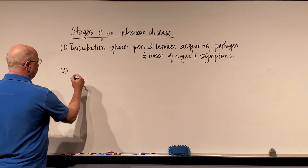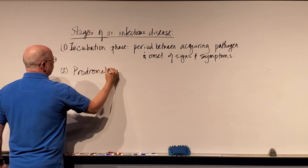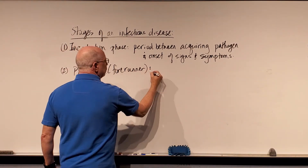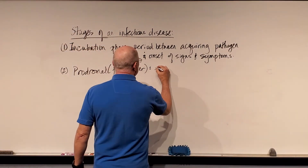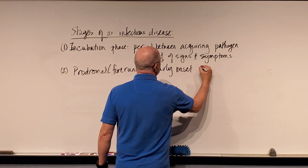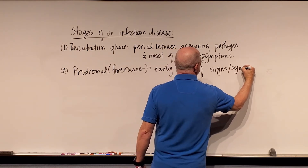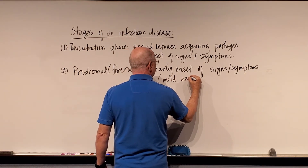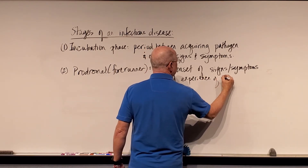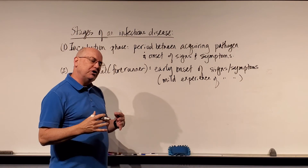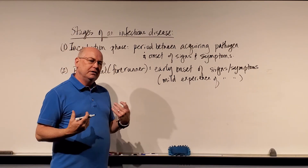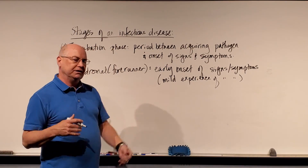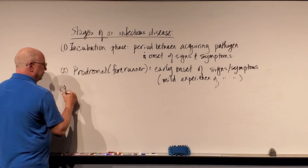The second period is called the prodromal phase. Prodromal really means 'forerunner.' This is the early onset of signs or symptoms, with a mild expression of those signs and symptoms. This is when you're starting to feel like something's coming on but you're not really sick yet — like, 'I'm starting to feel not well, I hope I'm not getting something.' That would be the prodromal phase: the early onset of mild signs and symptoms.